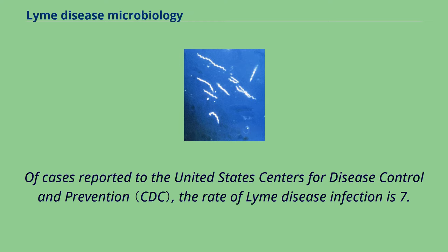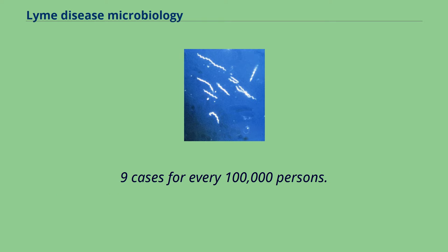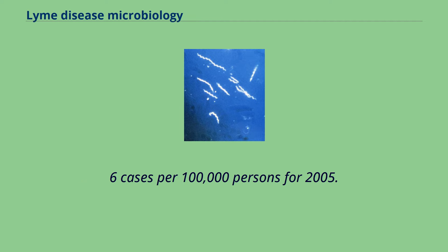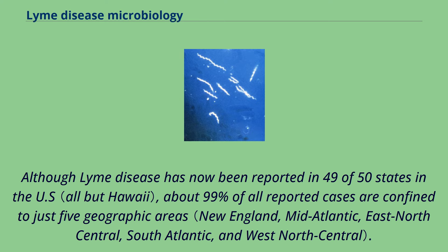Of cases reported to the United States Centers for Disease Control and Prevention, the rate of Lyme disease infection is 7.9 cases for every 100,000 persons. In the 10 states where Lyme disease is most common, the average was 31.6 cases per 100,000 persons for 2005. Although Lyme disease has now been reported in 49 of 50 states in the U.S., about 99% of all reported cases are confined to just 5 geographic areas.